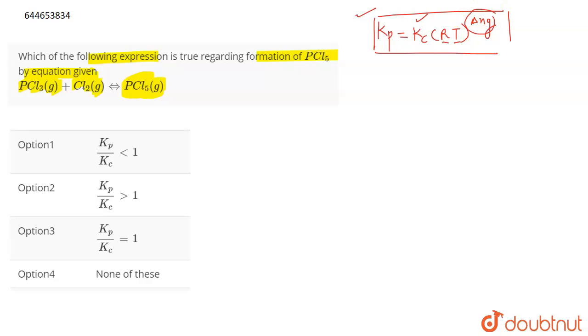R is the universal gas constant, T is the temperature, and delta ng represents the change in the gaseous moles.